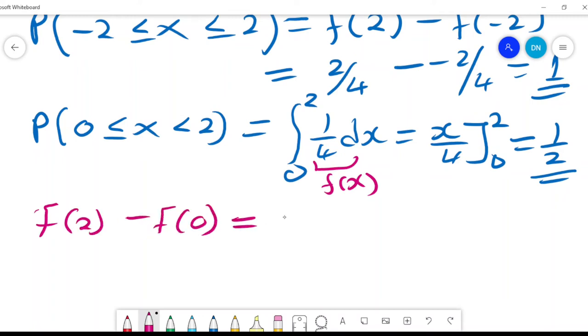So it will be 2 over 4 minus 0 over 4, and that gives me 2 over 4 is 1 over 2. So I can use the cumulative distribution function to get probabilities.